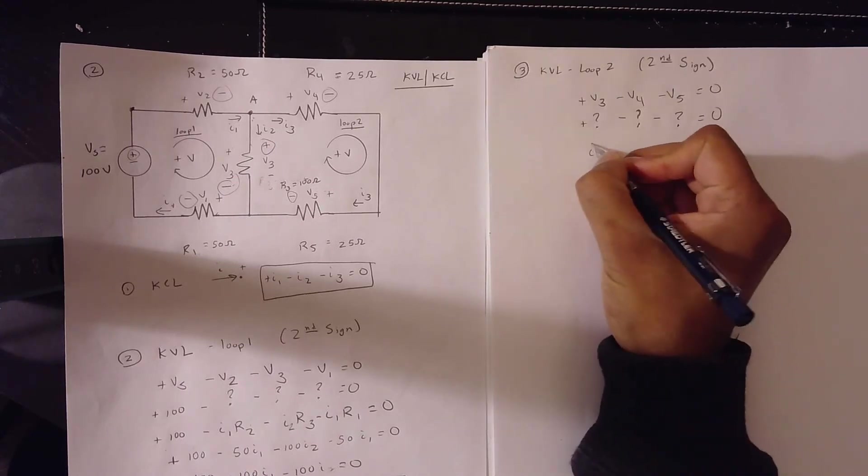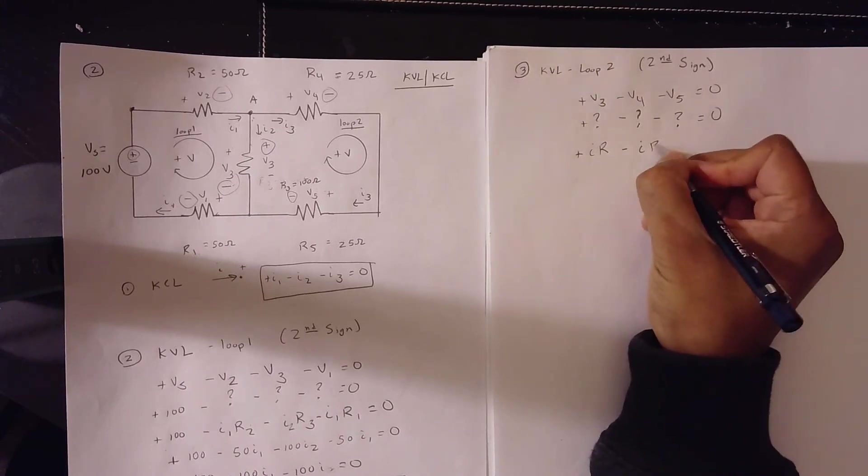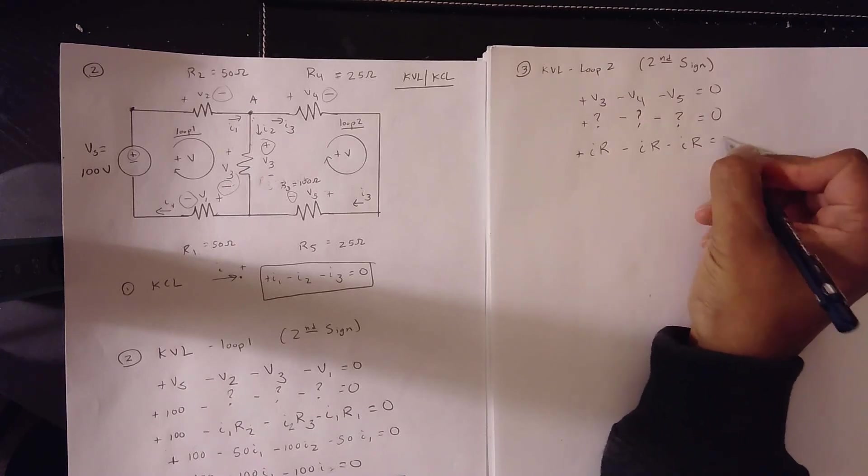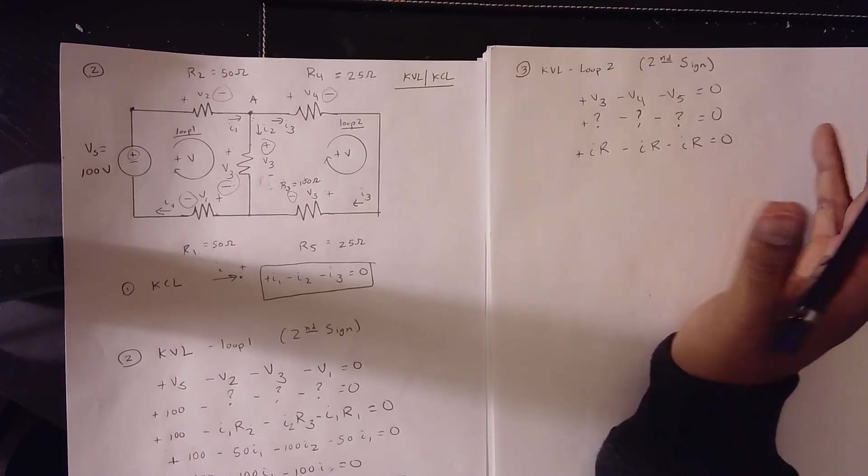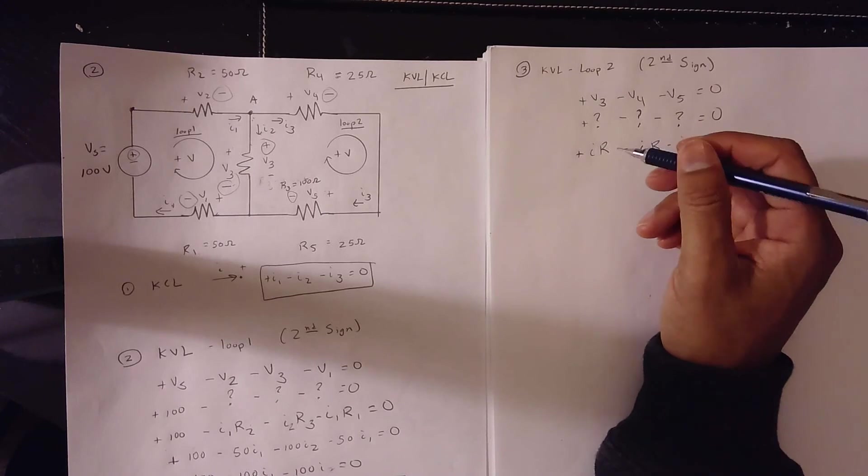If it's a question mark, we put IR. Minus IR. Minus IR is equal to 0. Now, when we have IR. What's the IR?